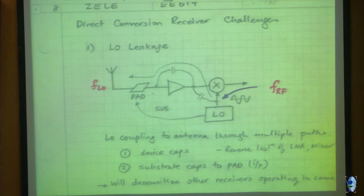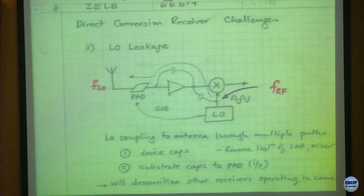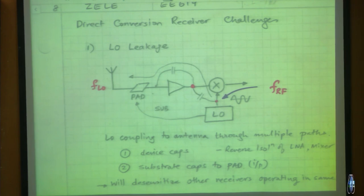What happens is this LO amplitude is pretty large, as you will see when we look at the mixer design. Since it is a large amplitude because you are doing switching - turning on and off - that large amplitude will leak through device capacitances and leak to the output of the LNA. Each LNA, no matter what you do, will have some coupling back to the input - you can improve it, you can reduce it, but it is never zero.